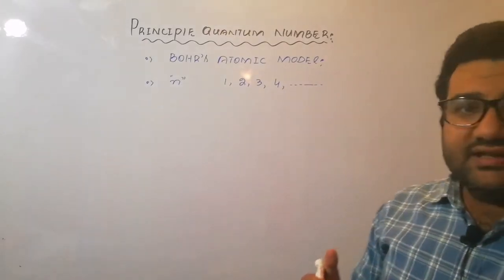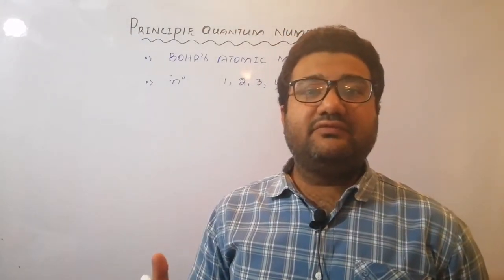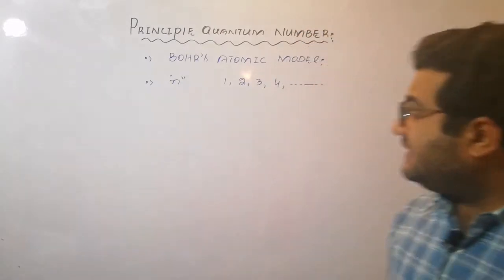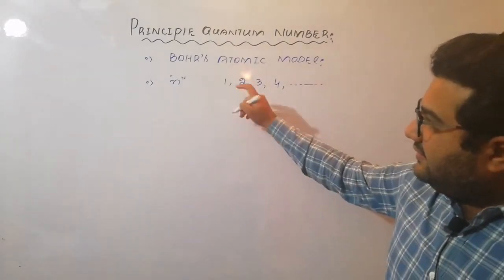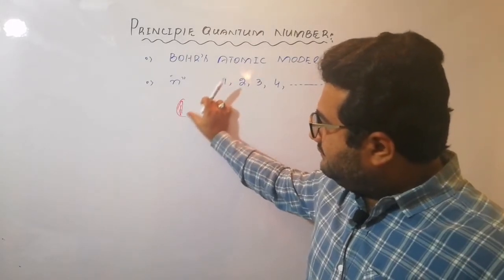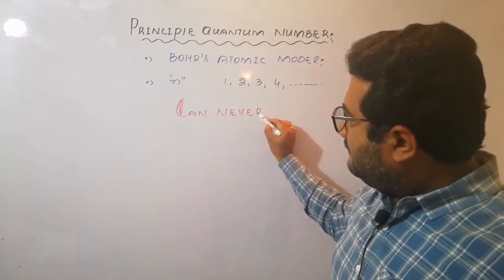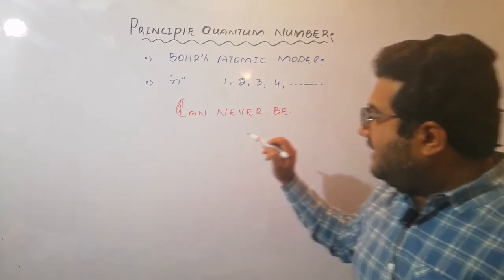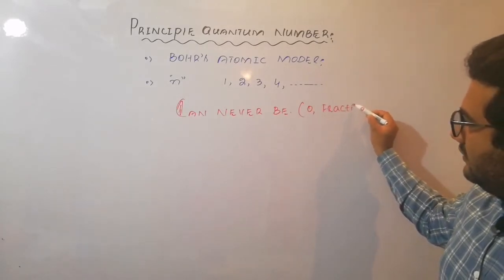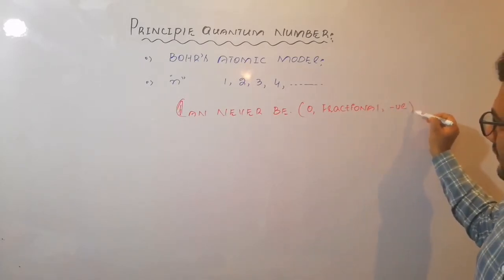Now, in the start of my lecture, I already told you that quantum numbers have some fixed values. You are not free to write down any value and say that this is the value of a quantum number. Just like in this case, it is clear that n can never be...